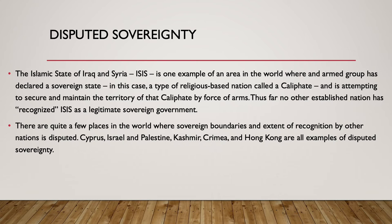There are quite a few places in the world where sovereign boundaries and the extent of recognition by other nations is disputed. Some examples include Cyprus, Israel and Palestine, Kashmir, Crimea, and indeed other areas of Ukraine, and Hong Kong — all examples of disputed sovereignty or disputed boundaries.